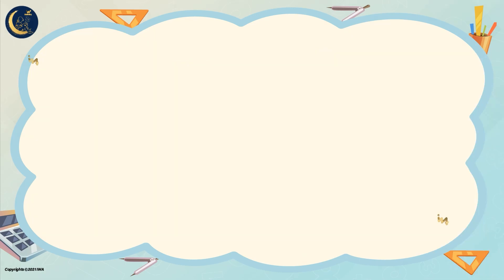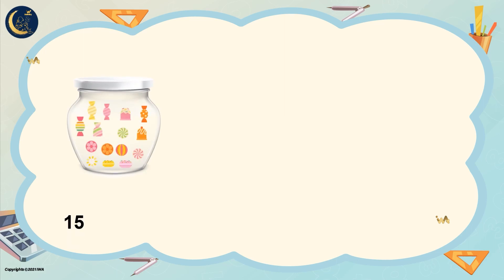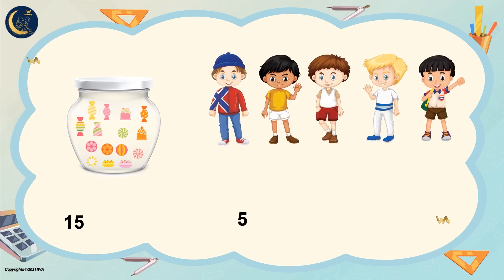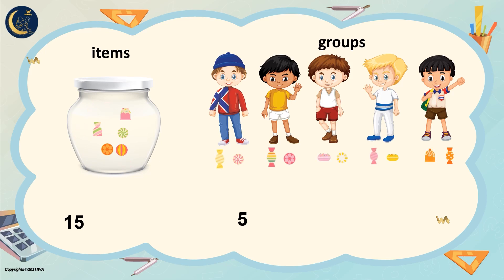Now look at this jar — there are 15 pieces of candy and we want to divide them equally among five children. How many pieces will we give to each child? The pieces of candy represent the items and the children represent the groups. We give each child a piece, then distribute again, and again, until we finish distributing all 15 items equally.